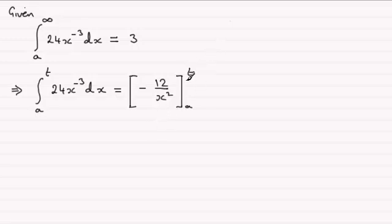So if we substitute t first of all in here, we're going to get minus 12 over t squared. And then from this we would subtract what we get when we put a through. We would have minus minus 12 over a squared. So I'm going to just change that to plus now 12 over a squared.